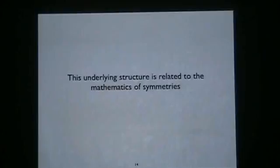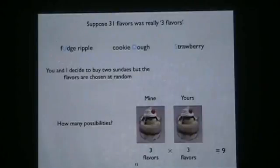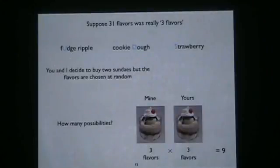This underlying structure is related to the mathematics of symmetry. To make clear I'm talking about math and not physics, I'll use an analogy. Suppose there are three flavors of ice cream — let's call them U, D, and S — and we go to buy a couple of sundaes, letting the guy behind the counter choose at random. How many possibilities are there for our sundaes? For each sundae, there are three choices, giving a total of nine possibilities from three flavors.